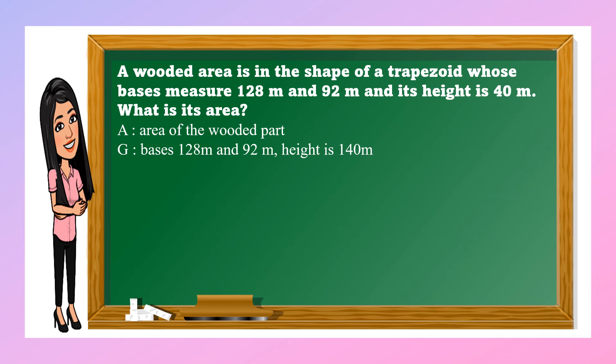Given: bases 128 meters and 92 meters and the height is 40 meters. Operation: we need addition, multiplication and division. Number sentence: we have 128 plus 92 times 40 divided by 2 equals n.